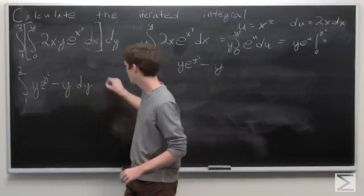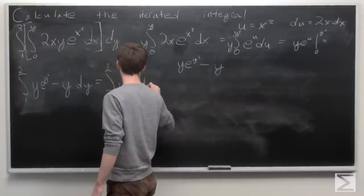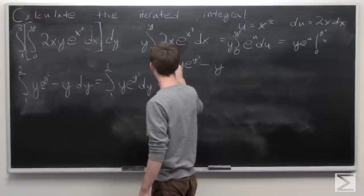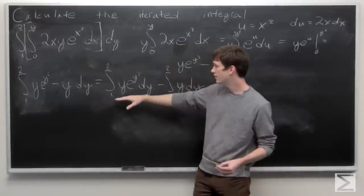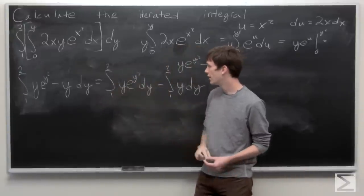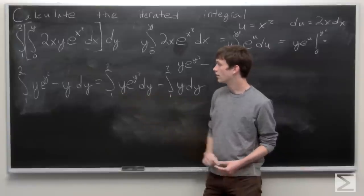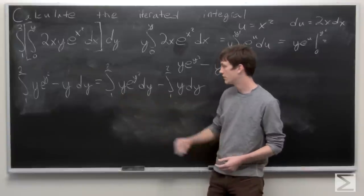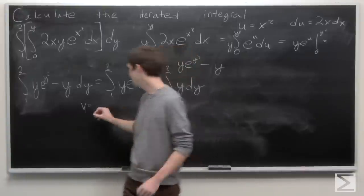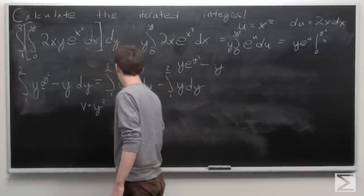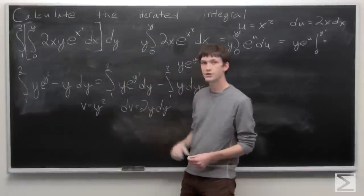We split this integral into two parts: the integral from 1 to 2 of y·e to the y squared dy, minus the integral from 1 to 2 of y dy. For the first integral, substitution looks good again. We'll use v since we already used u — let v equal y squared, and dv is 2y dy.